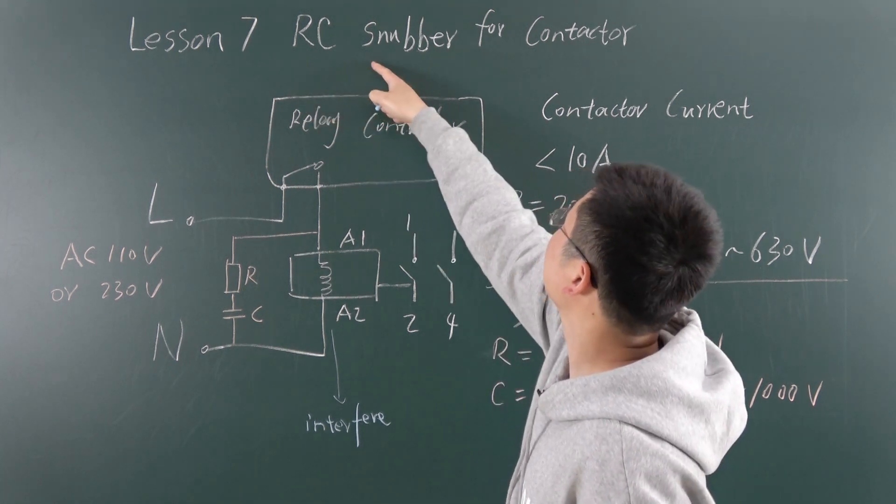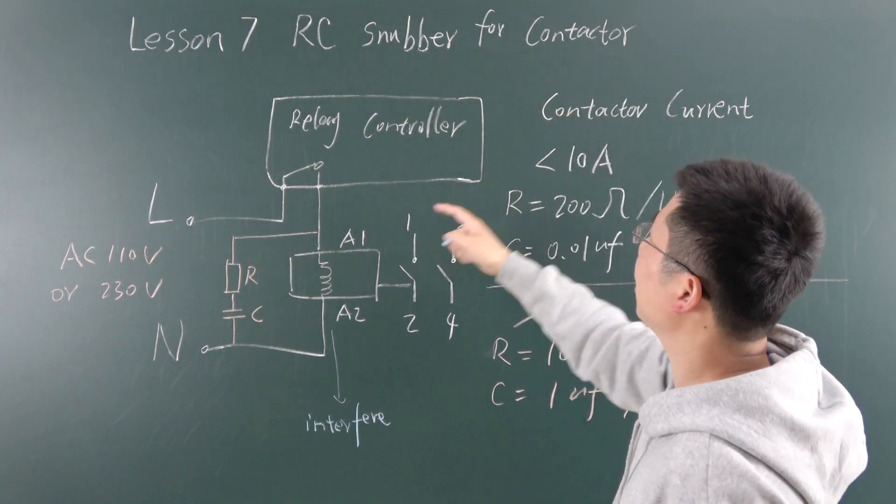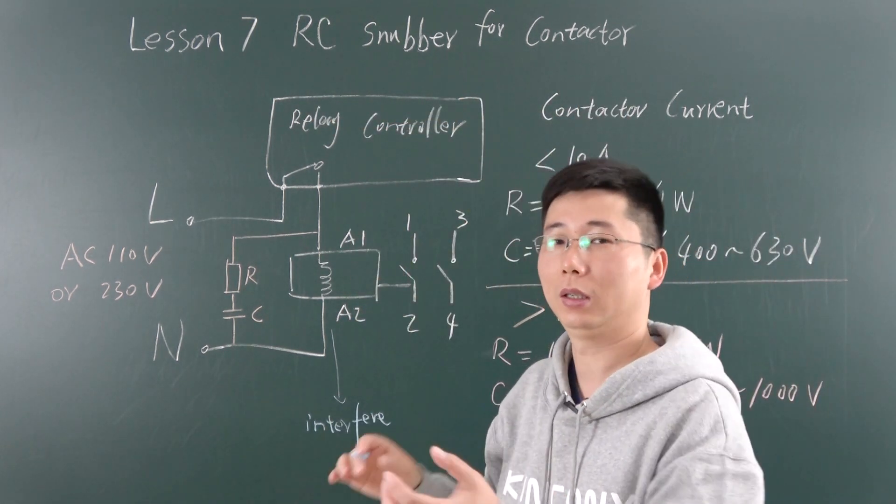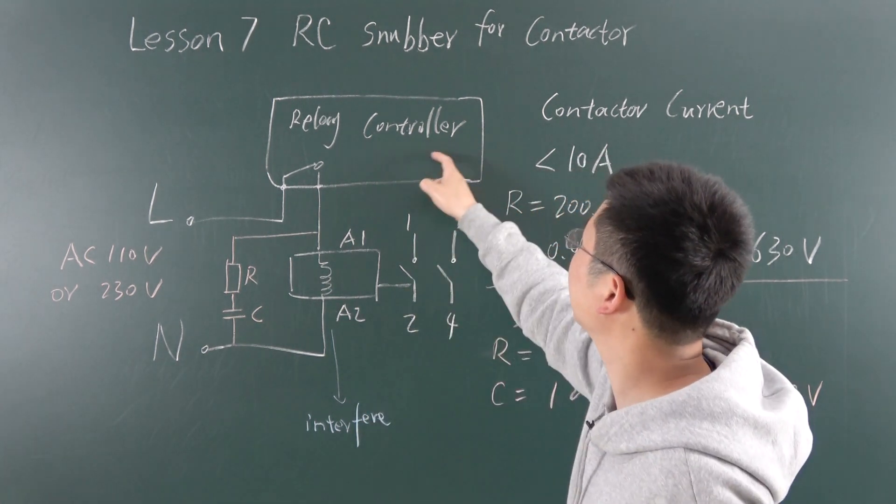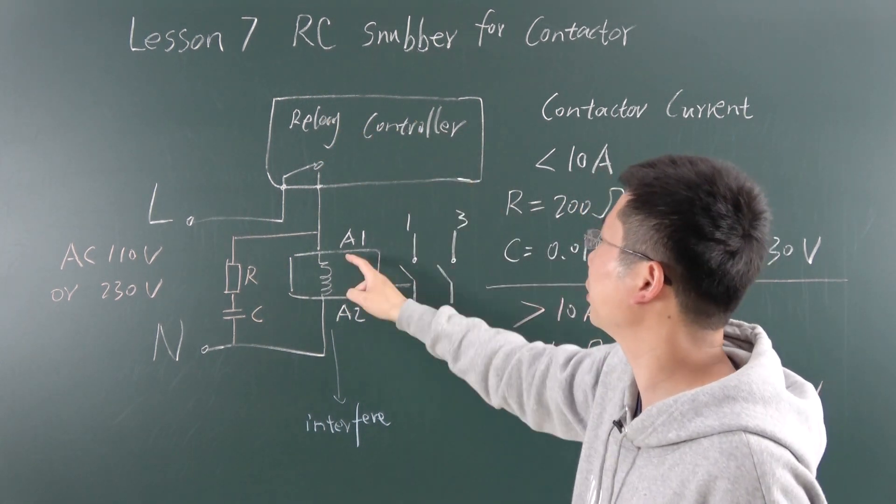We will look at this RC snubber for contactor. We have made a video telling everyone how to make a smart distribution box using a relay controller to control the AC contactor.